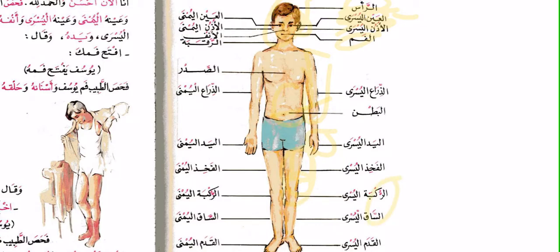الركبة اليسرى — الركبة is the knee. There's a famous hadith where Jibreel came to the Prophet ﷺ and sat ركبتيه إلى ركبتيه — his two knees to the knees of the Prophet. الساق is the shin, from the knee to the ankle. الساق اليسرى is the left shin. القدم is the foot — like كرة القدم means football/soccer. القدم اليسرى is the left foot.